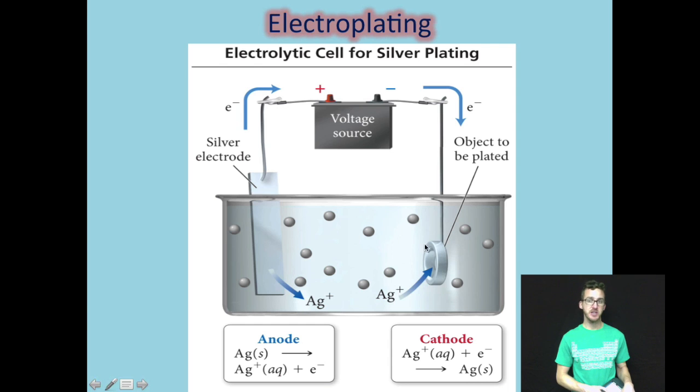So, as you take a look at the image in your notes and on your screen, here's an example of electrolytic cell that is set up for silver electroplating. Here, we have the object that we want to be coated in silver. Here, we have our plate metal, in this case silver.